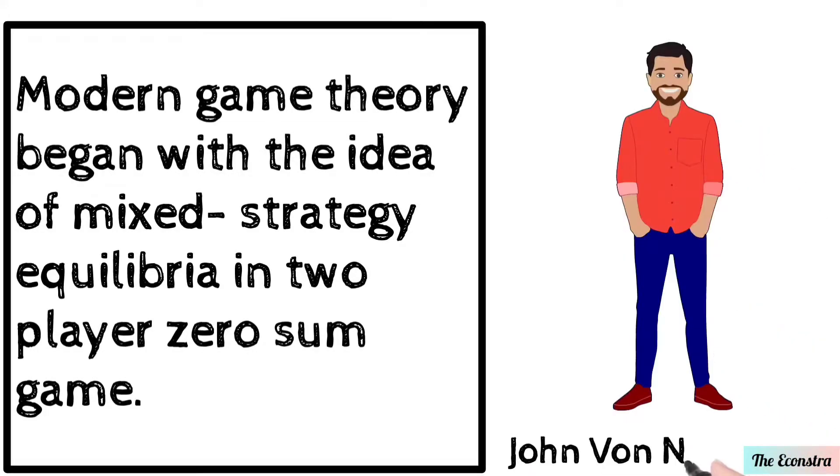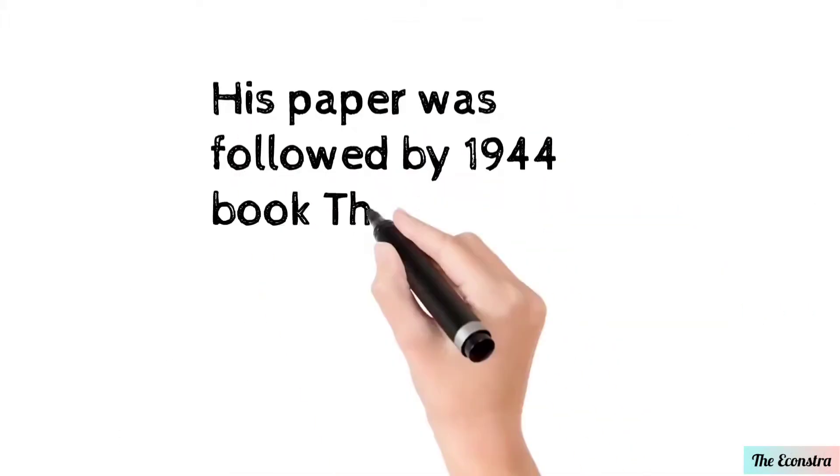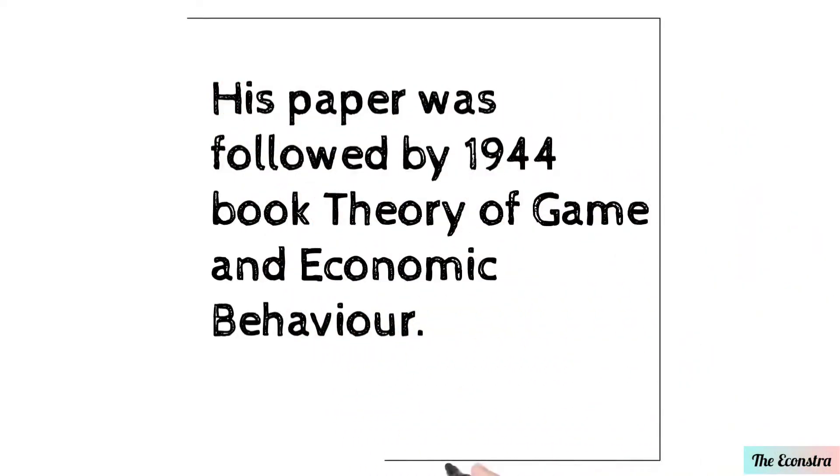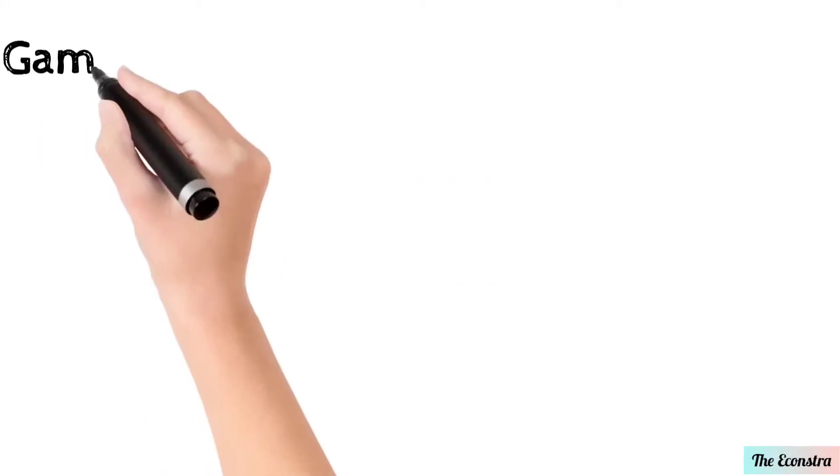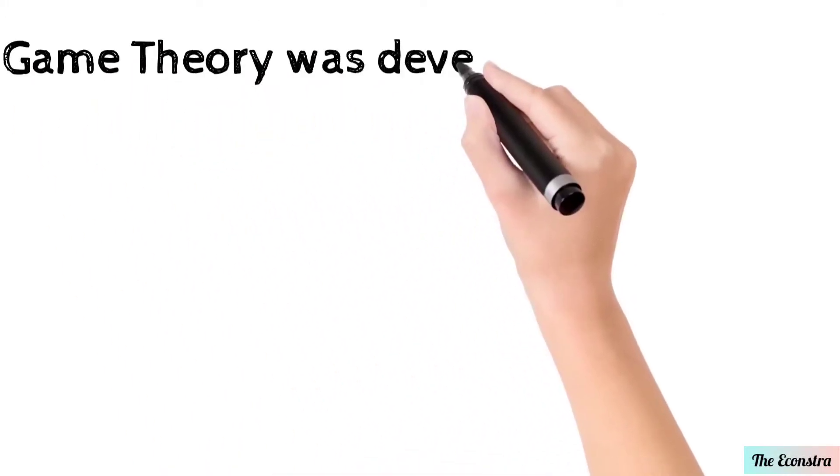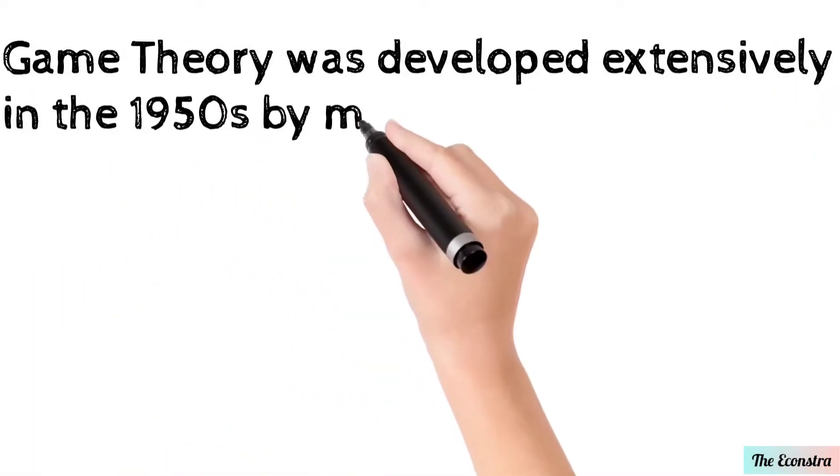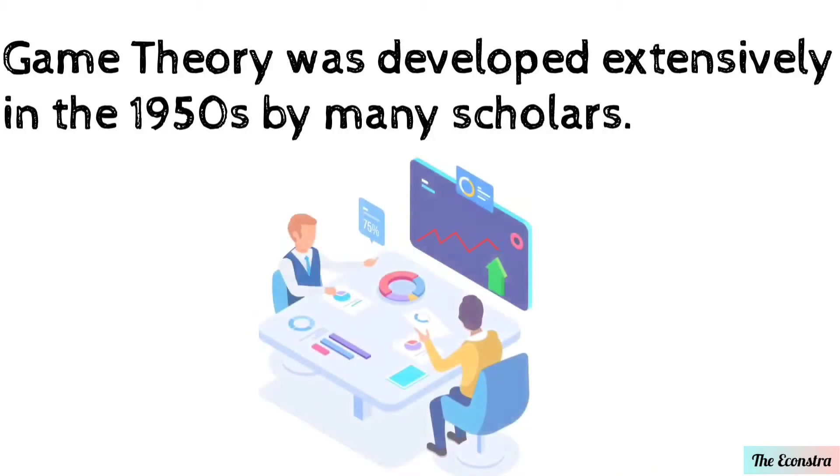This theory was introduced by John Von Neumann. His paper was followed by the 1944 book Theory of Games and Economic Behavior. Game theory was developed extensively in the 1950s by many scholars focused on developing game theory.